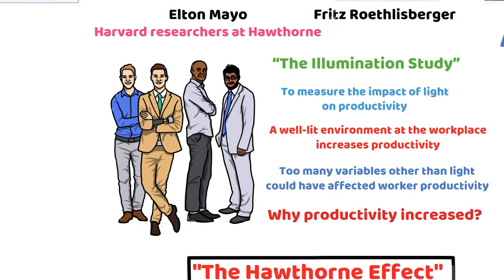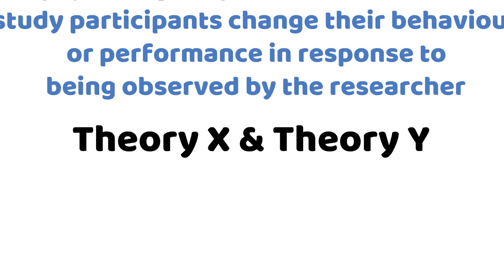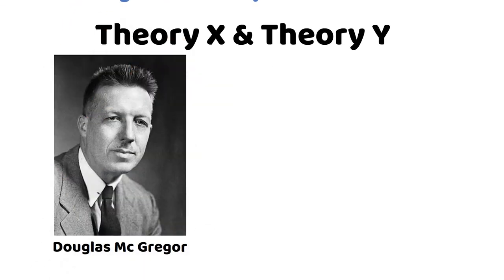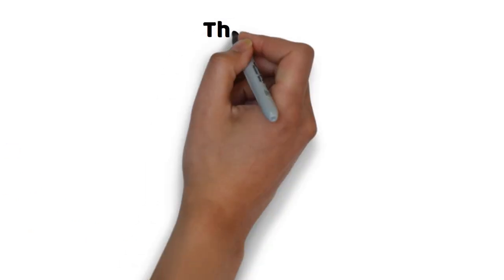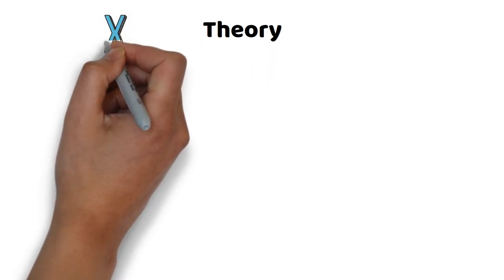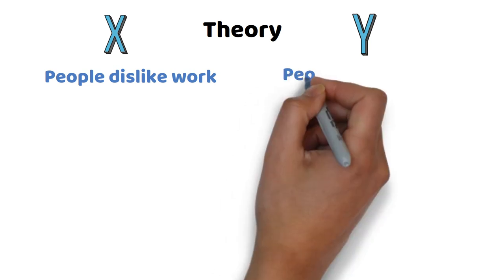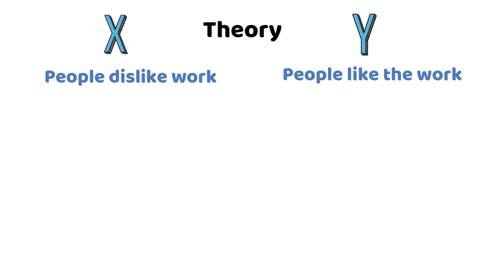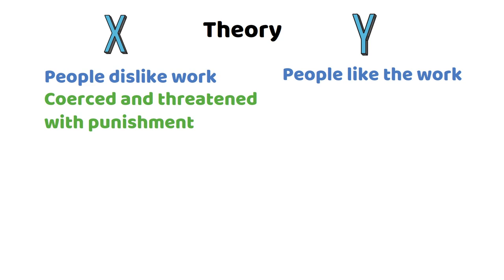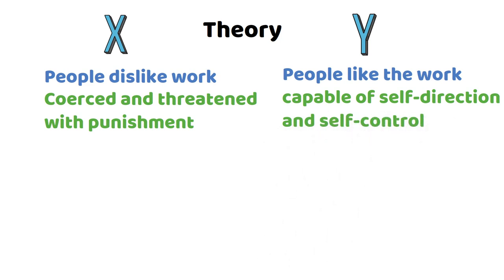Another theory in this domain is Theory X and Theory Y, proposed by management professor Douglas McGregor. The theory depicts two sharply contrasting sets of assumptions about human nature, or two opposing perceptions of employee motivation. Theory X says that most people dislike work and avoid it when they can. Theory Y says that work is a natural activity, like play or rest, and people like it. Theory X says that most people must be coerced and threatened with punishment before they will work, and require close direction. Theory Y says that people are capable of self-direction and self-control if they are committed to objectives.